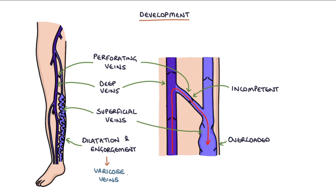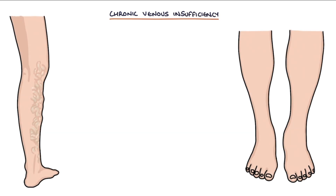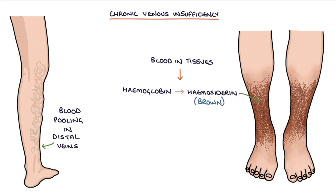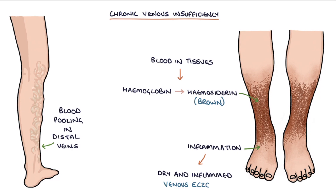Varicose veins are caused by incompetent valves in the perforating veins. When blood pools in the distal veins, the pressure causes the veins to leak small amounts of blood into the nearby tissues. The haemoglobin in this leaked blood breaks down into haemosiderin, which is deposited around the shins, giving a brown discoloration to the lower legs known as haemosiderin staining. Pooling of blood in the distal tissues results in inflammation — the skin becomes dry and inflamed, referred to as venous eczema. The skin and soft tissues also become fibrotic and tight, causing the lower legs to become hard and narrow, referred to as lipodermatosclerosis.